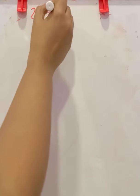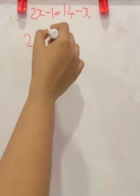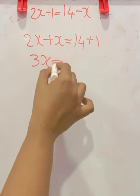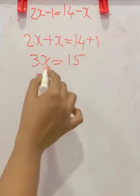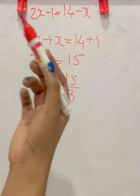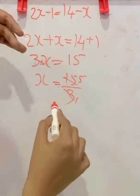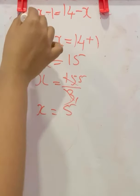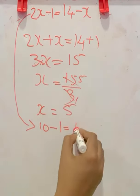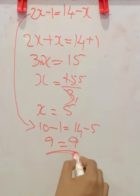Next: 2x minus 1 is equal to 14 minus x. Taking x to LHS gives plus x, and taking minus 1 to RHS gives plus 1. So 2x plus x is 3x, equal to 14 plus 1 is 15. Taking 3 to RHS: x equals 15 divided by 3, which is 5. Verifying: 2 into 5 minus 1 is 10 minus 1 is 9. On RHS, 14 minus 5 is 9. LHS equals RHS.